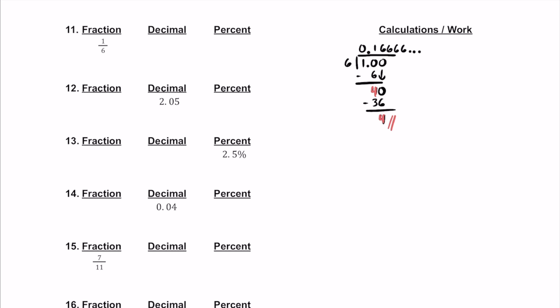As a decimal, this is going to be 0.16 with a 6 repeating over and over. And what about the percentage? Let's multiply by 100 and slide the decimal twice to the right. This is going to be 16.6 repeater percent. Make sure that repeater is on top of the 6. The 6 repeater is 2 thirds. So we should also write 16 and 2 thirds percent. These two are equivalent to each other, and we should write both options down.